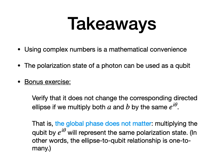So here is what you should remember. First of all, using complex numbers is just a mathematical convenience. Second, the polarization state of the single photon can be used as a qubit. And as a bonus exercise, you can try to verify that multiplying a and b by the same so-called global phase, e to the i theta, does not change the corresponding underlying directed ellipse. That is, multiplying the qubit by a global phase does not matter, because it will represent the same polarization state of the photon.